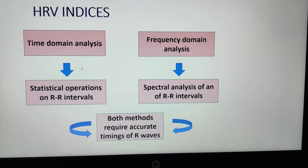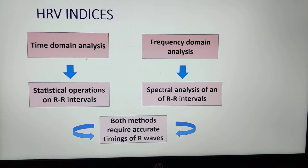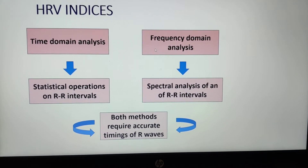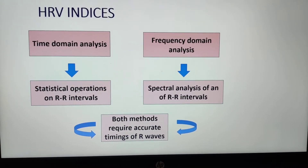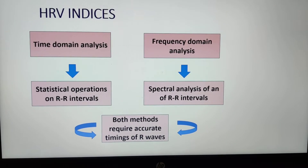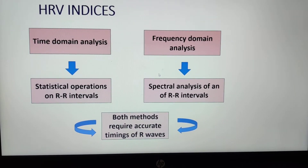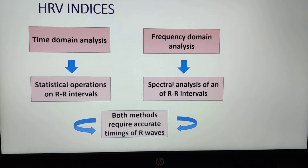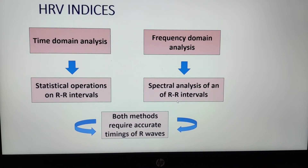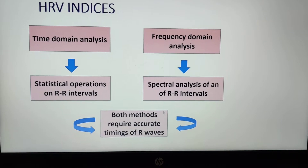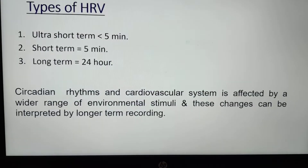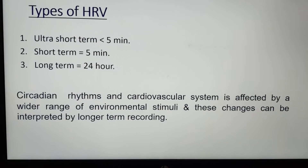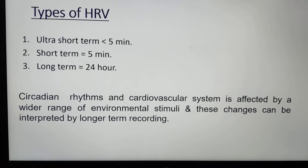Starting with the two domains in HRV: the first is time domain analysis, and the second is frequency domain analysis. Time domain analysis is a statistical operation on RR intervals, and frequency domain analysis is the spectral analysis of RR intervals. Both require accurate timing of arrays. There are three types of HRV: the first is ultra short term, which is when HRV is conducted for less than 5 minutes.